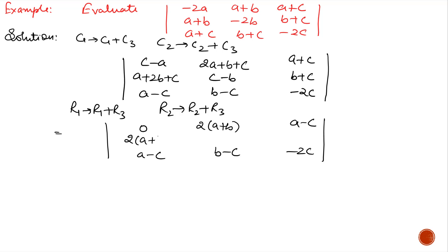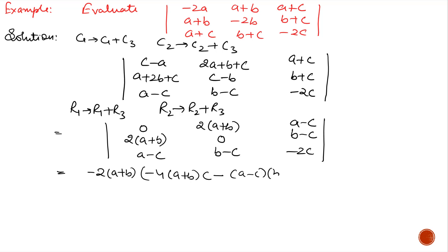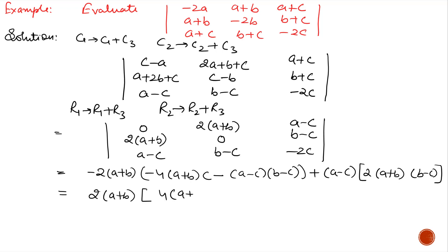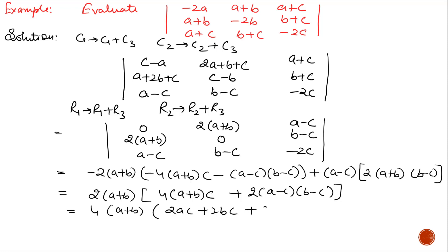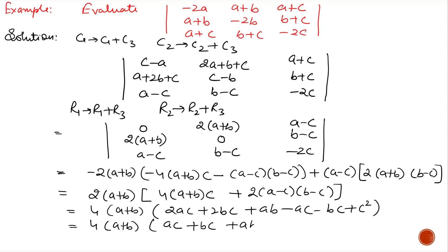In the second row we will get 2(a+b), 0, and (b-c). Now expanding along the first row and taking 2(a+b) common, the remaining part is 4(a+b)(c+a) - (c-a)(b-c) which appears twice, giving 2(a-c)(b-c). Taking 2 common again, and after simplification and factoring, we will get 4(a+b)(b+c)(c+a).